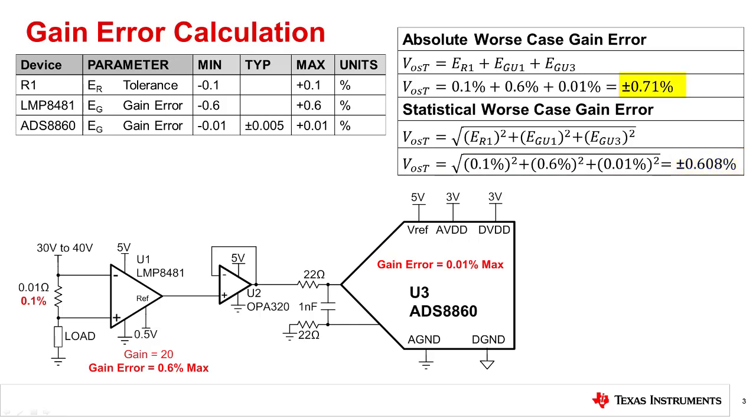In this example, the error for the current shunt amplifier, U1, is the dominant source of error. For many circuits, the gain is set by external discrete resistors. For this type of circuit, a Monte Carlo analysis is a good approach for finding gain error. The Precision Labs video, titled Gain Error and Monte Carlo Analysis, covers this topic.